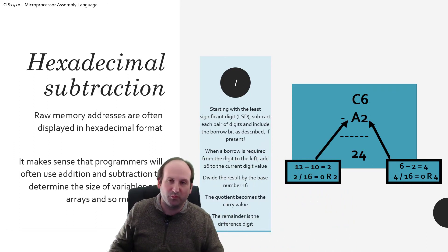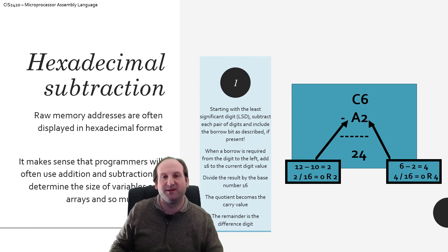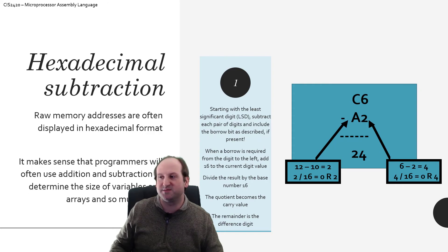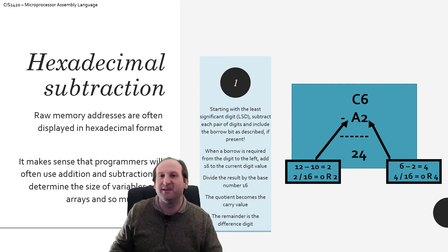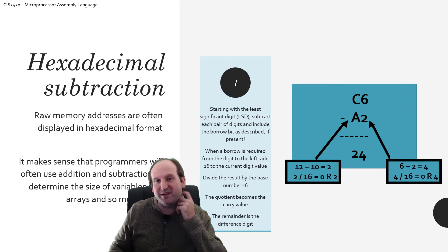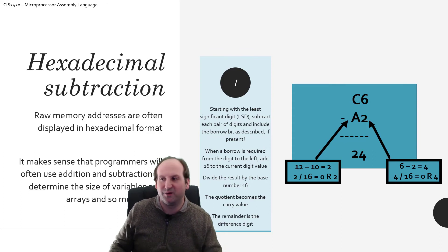Hexadecimal subtraction works the same way as our fourth-grade counterparts, and again it's hard to remember we're dealing with base 16, especially when we do a borrow. Let's look at C6 minus A2. So 6 minus 2 is 4 — that's totally fine. And C minus A: C is 12, A is 10, so 12 minus 10 gets me a 2. We don't have to do any borrowing — just normal subtraction. Result is 24.